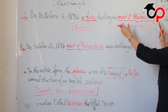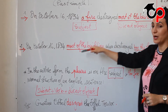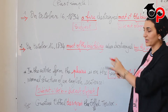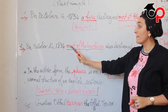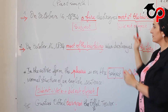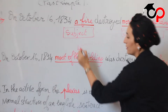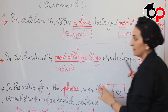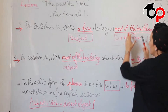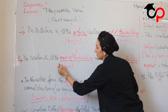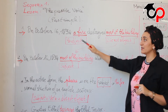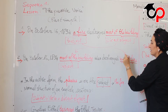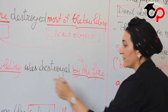What will we do? This direct object will become the subject — the subject of the passive sentence, the passive form. Most of the building becomes the subject. In this sentence, the structure changed. Here, the direct object becomes the subject of the sentence. And the subject or the doer of the active sentence becomes the direct object of the passive form.